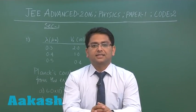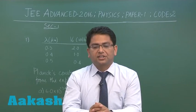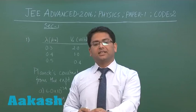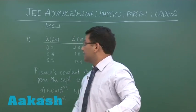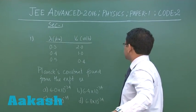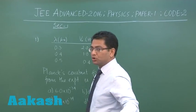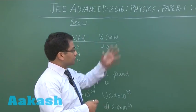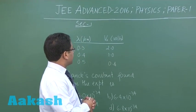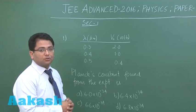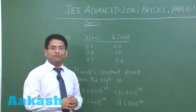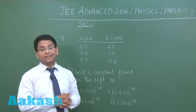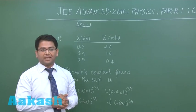Hello and welcome to this session hosted by Akash. As is very clear from the backdrop, the main agenda of today's discussion is JEE Advanced 2016 Physics Paper 1, Code 2. We are going to discuss the entire question paper as regards to physics. We begin with Section 1, which has four questions altogether. A correct solution awards you 3 marks, while an incorrect answer penalizes you minus 1.